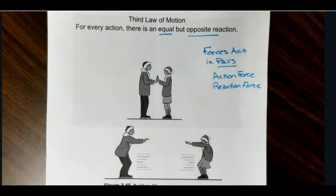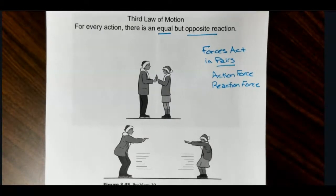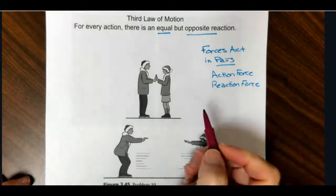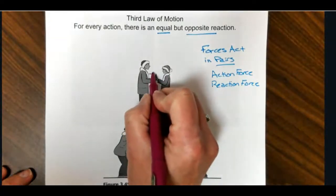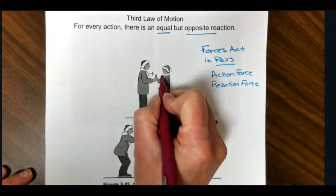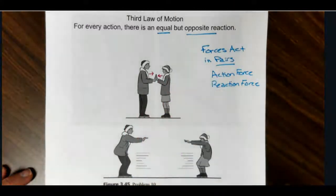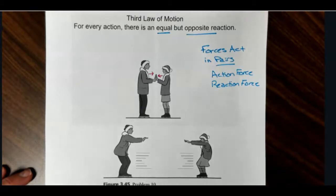So if we look at our ice skaters, in this scenario, the two skaters are going to exert a force on each other. So he's going to exert a force on her, she is going to exert a force back that is equal in size and opposite in direction.